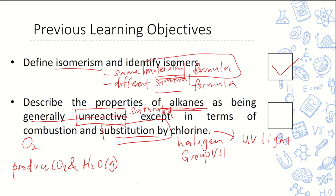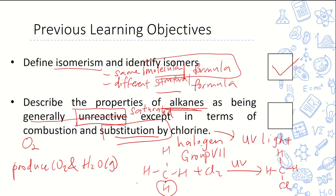One example of substitution is methane reacting with Cl2 under UV light. One hydrogen is replaced by chlorine, and HCl is also formed. This is substitution reaction by a halogen — one hydrogen is replaced per reaction, and a mixture of products can form.